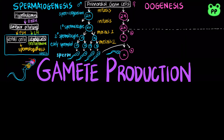Testosterone regulates the production of GnRH, FSH, and LH through negative feedback mechanisms. Sertoli cells also secrete the hormone inhibin, which reduces FSH secretion from the anterior pituitary.